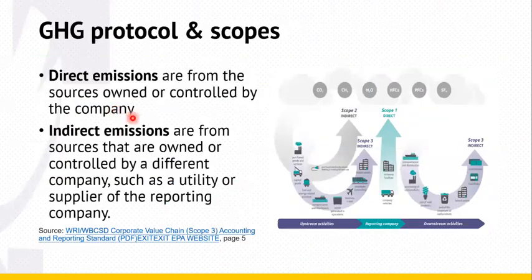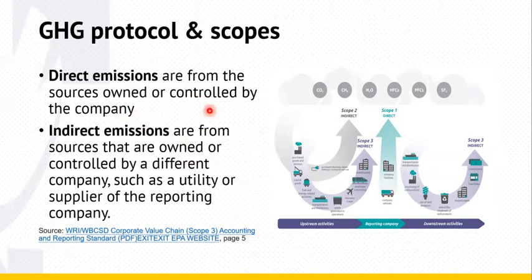My second topic is greenhouse gas protocols and scopes. There are two different types of emissions: direct emissions and indirect emissions. For scope one, those are direct emissions from sources owned or controlled by the company. Scope two covers indirect emissions from sources that are owned or controlled by different companies, such as utilities or suppliers of the reporting company.